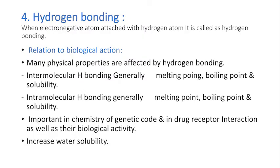The fourth property is hydrogen bonding. When any electronegative atom is attached with a hydrogen atom, it is called hydrogen bonding. It is mainly of two types: intramolecular hydrogen bonding and intermolecular hydrogen bonding. Relation to Biological Action: Many physical properties are affected by hydrogen bonding. Intermolecular hydrogen bonding generally decreases melting point, boiling point, and solubility of compounds. It is important in the chemistry of the genetic code and in drug-receptor interactions, as well as their biological activity.